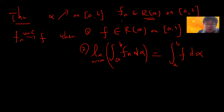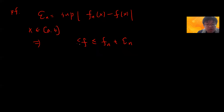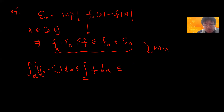So if you have uniform convergence, you can exchange the integral with the limit. For the proof, define epsilon_n to be the supremum of |fn(x) - f(x)|, since fn is a pointwise convergent function with respect to f. For each x in [a, b], writing down the definition and doing the integration, the integral from a to b of (fn minus epsilon_n) d-alpha is greater than the lower integral, and also the upper integral is less than the integral of (fn plus epsilon_n) d-alpha.